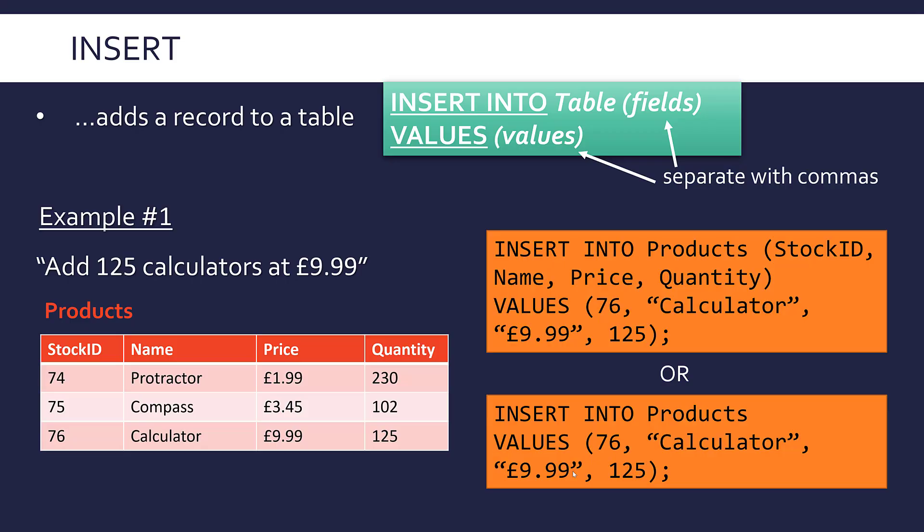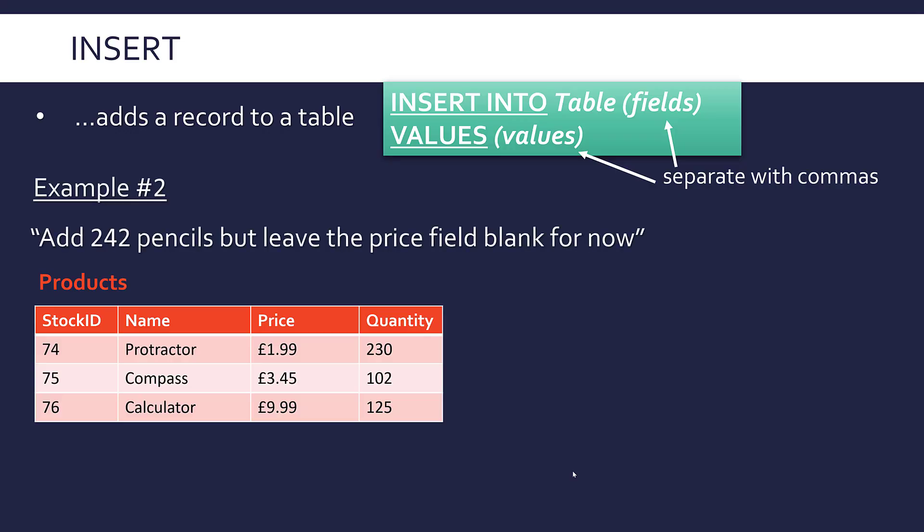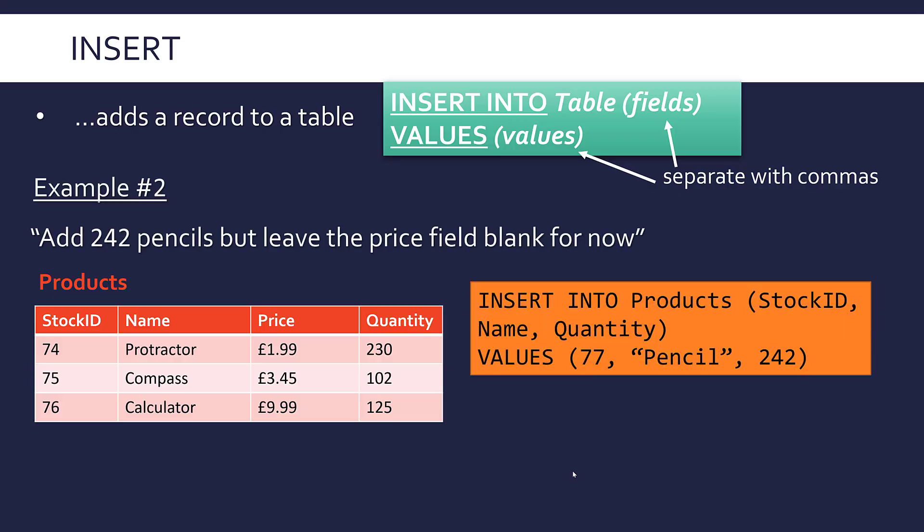Now, if you weren't going to add data to all of these fields, you would need to use that first version. So let's look at that here. If I now want to add 242 pencils, but leave the price field blank for now, I need to have a list of my fields. So what I want is I want us to have three fields filled in, but one left blank, which is not that common, but happens from time to time. You might not want to fill in every part of your record straight away.